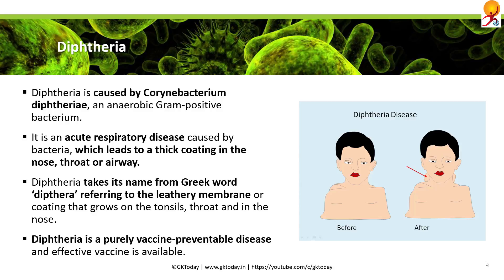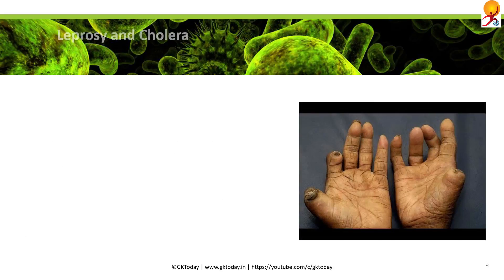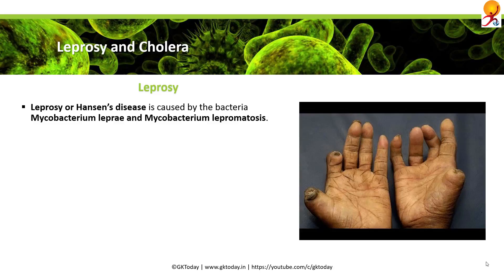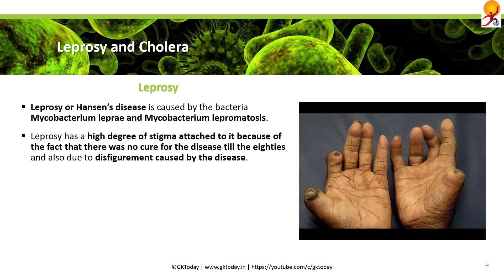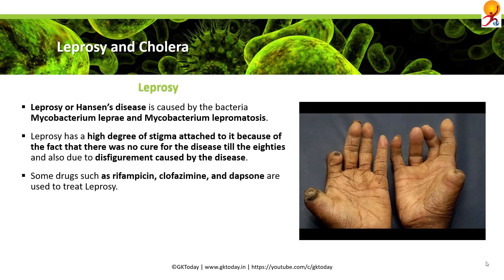Diphtheria is a purely vaccine-preventable disease and an effective vaccine is already available. Leprosy, or Hansen's disease, is caused by the bacteria Mycobacterium leprae and Mycobacterium lepromatosis. Leprosy carries a high degree of stigma because there was no cure until the late 1980s and due to the disfigurement it causes. Drugs such as rifampicin, clofazimine, and dapsone are usually used to treat leprosy.